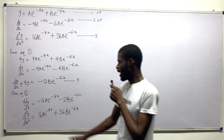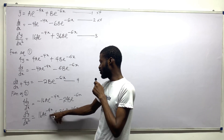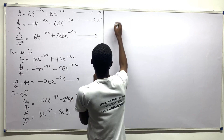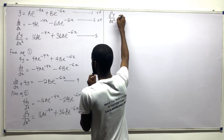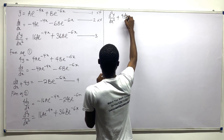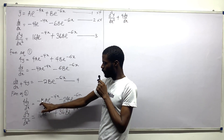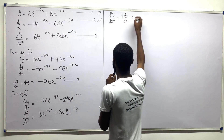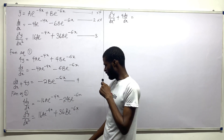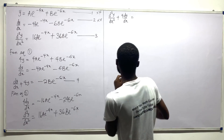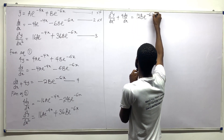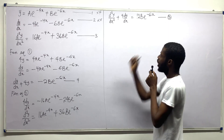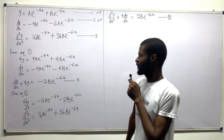Adding these two equations eliminates the A terms. We get: d²y/dx² + 4(dy/dx) = 36 minus 24 = 12Be to negative 6x. Call this equation 5. We are close — equation 4 has minus 2Be to negative 6x and equation 5 has 12Be to negative 6x.